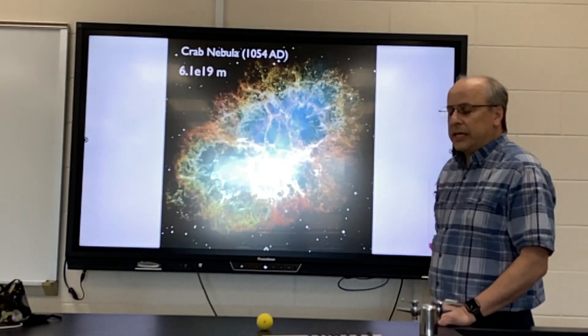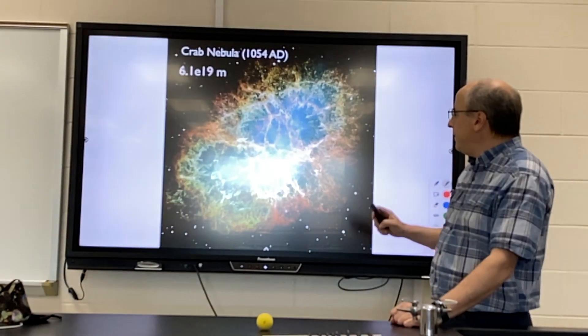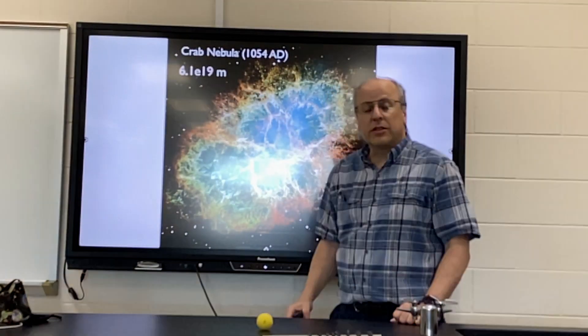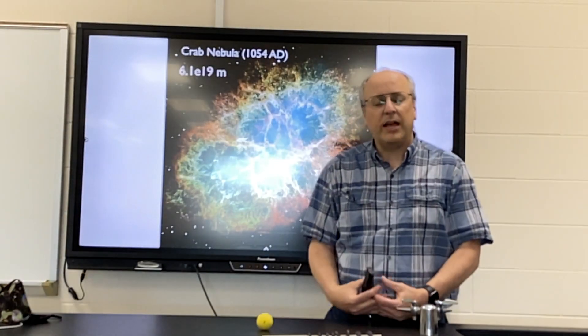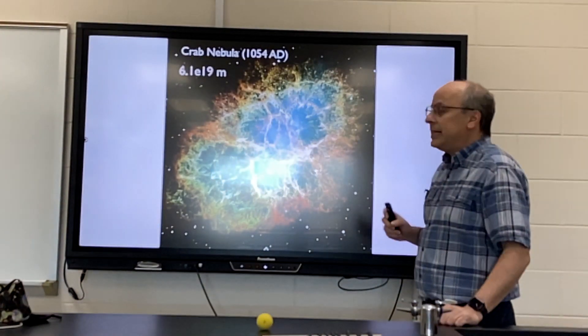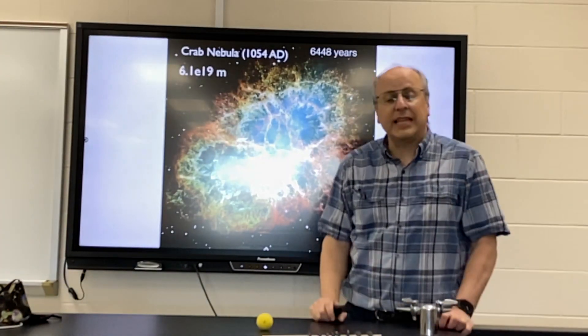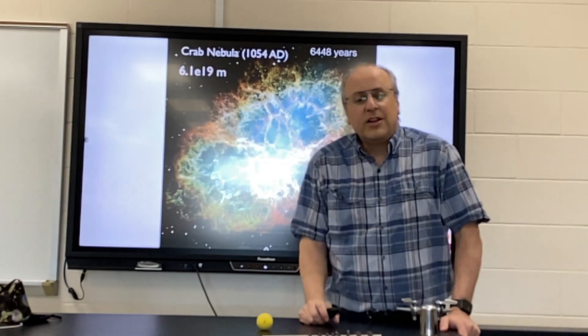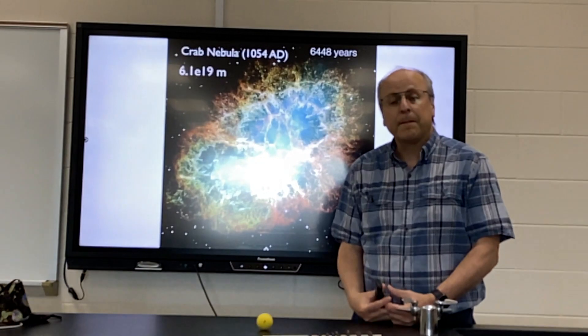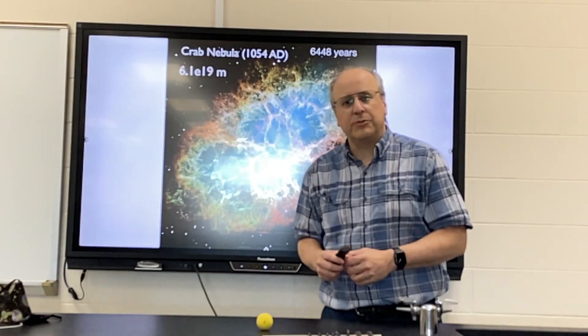So the Crab Nebula was a star that exploded, and we saw it explode here on Earth in the year 1054. When did it actually explode? Figure out how long it took the light to reach us from that original star if it is 6.1 × 10^19 meters away. You should get an answer of almost 6,500 years. So when we saw this star explode back in 1054, realize the actual explosion had taken place almost 7,000 years before that.